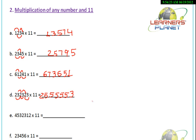Let's take the next example: 4532312 into 11. Write 2 as it is. 1 plus 2 is 3. 3 plus 1 is 4. 2 plus 3 is 5. 3 plus 2 is 5. 5 plus 3 is 8. 4 plus 5 is 9. And 4 as it is. So the answer is 49855432.